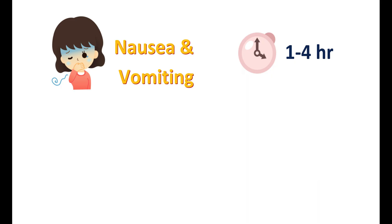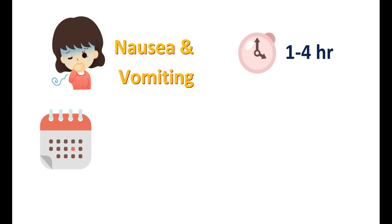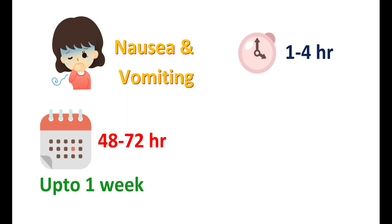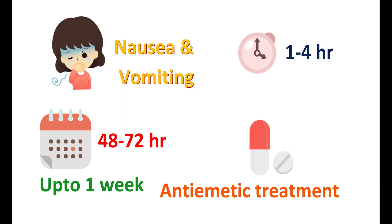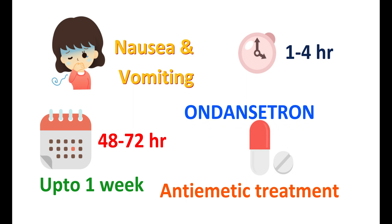Since this drug is given by IV infusion, immediate side effects can be observed. However, this effect can continue for a few days and may peak, producing severe nausea and vomiting after 48 to 72 hours. In a few people, nausea and vomiting can persist up to one week. Therefore, anti-emetic treatment should be continued even after stopping cisplatin, and if required, additional anti-emetics such as ondansetron may be added.